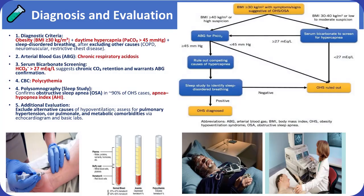The diagnosis of OHS requires the presence of obesity with a BMI of 30 kg per square meter or greater, daytime hypercapnia with an arterial PaCO2 above 45 mmHg, and evidence of sleep-disordered breathing after excluding other causes of hypoventilation such as COPD or neuromuscular disease. Arterial blood gas typically shows chronic respiratory acidosis, while a serum bicarbonate level above 27 mEq/L suggests chronic carbon dioxide retention and indicates the need for confirmation with arterial testing.